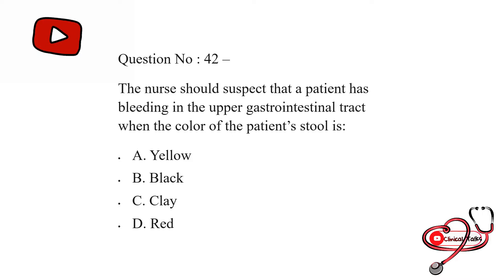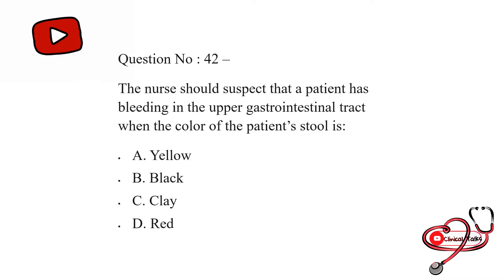The nurse should suspect that a patient has bleeding in the upper GI tract when the color of the patient's stool is: yellow, black, clay, or red. The correct answer is black.